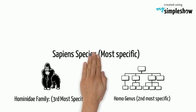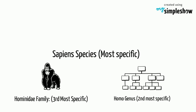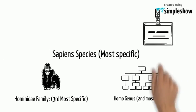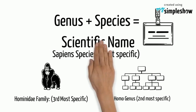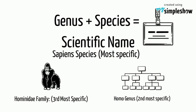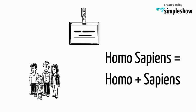Finally, we have the species sapiens. To find the scientific name of animals, we combine the genus name and the species name. So for humans, our name is Homo sapiens, since our genus is Homo and our species is sapiens.